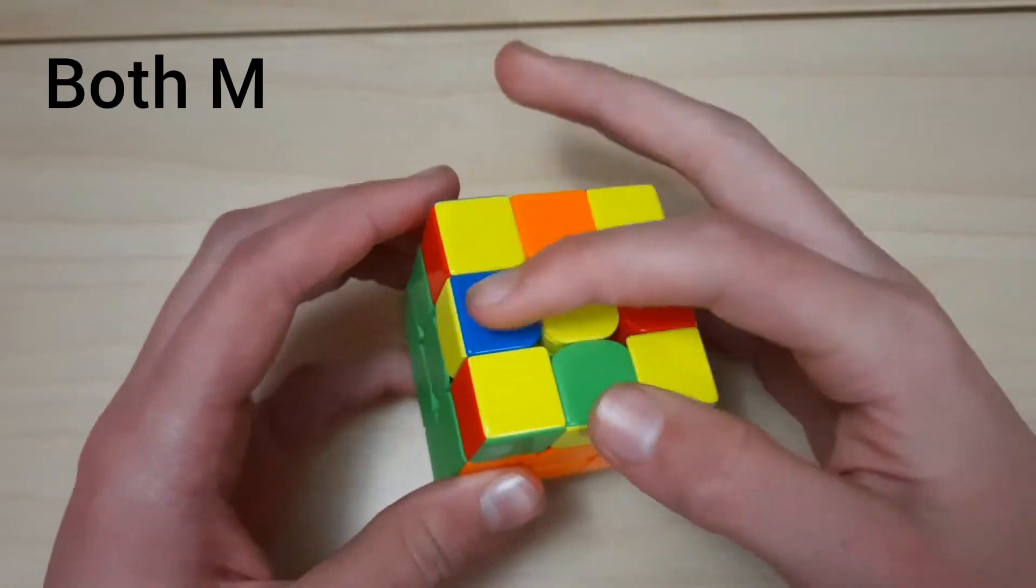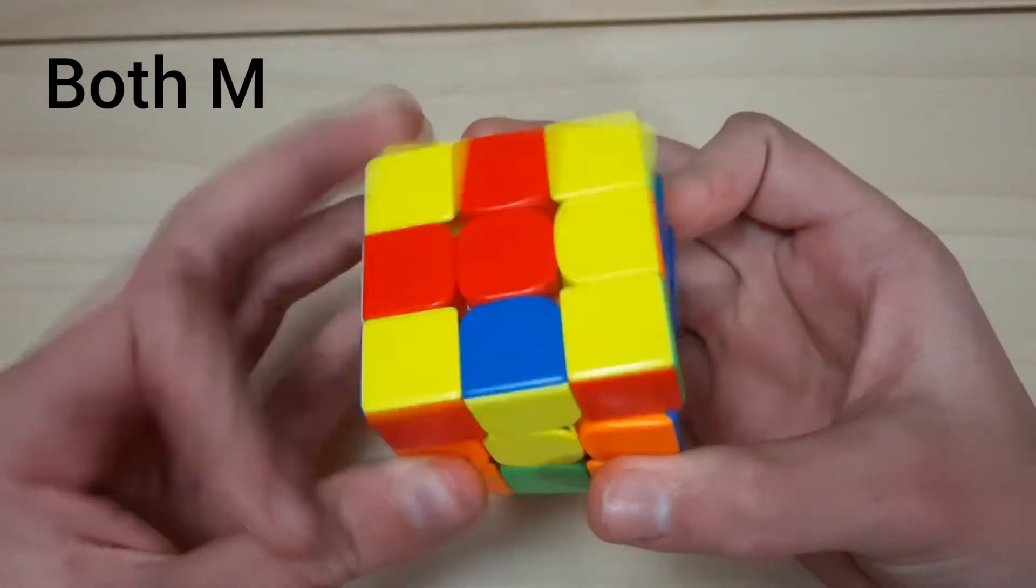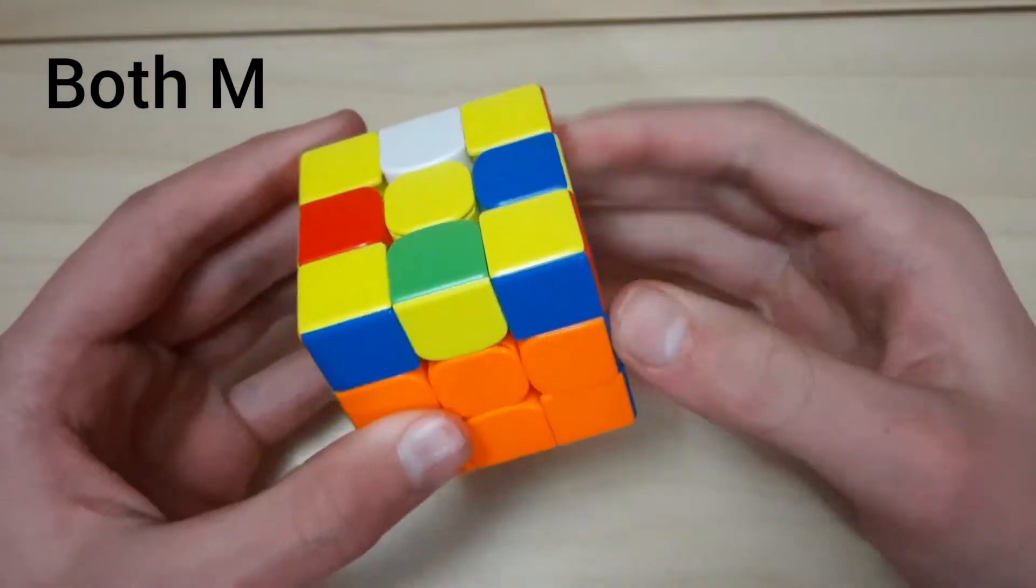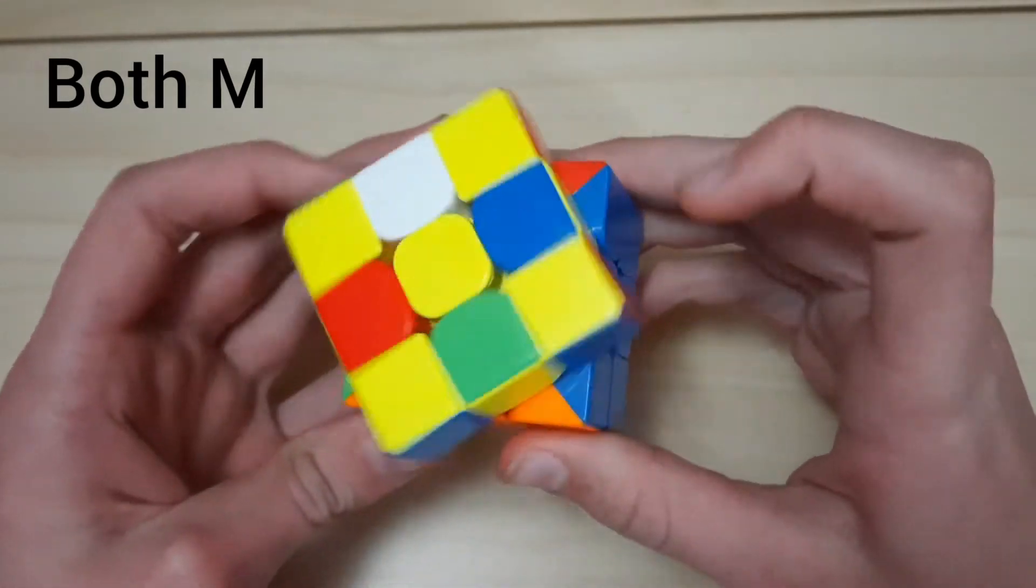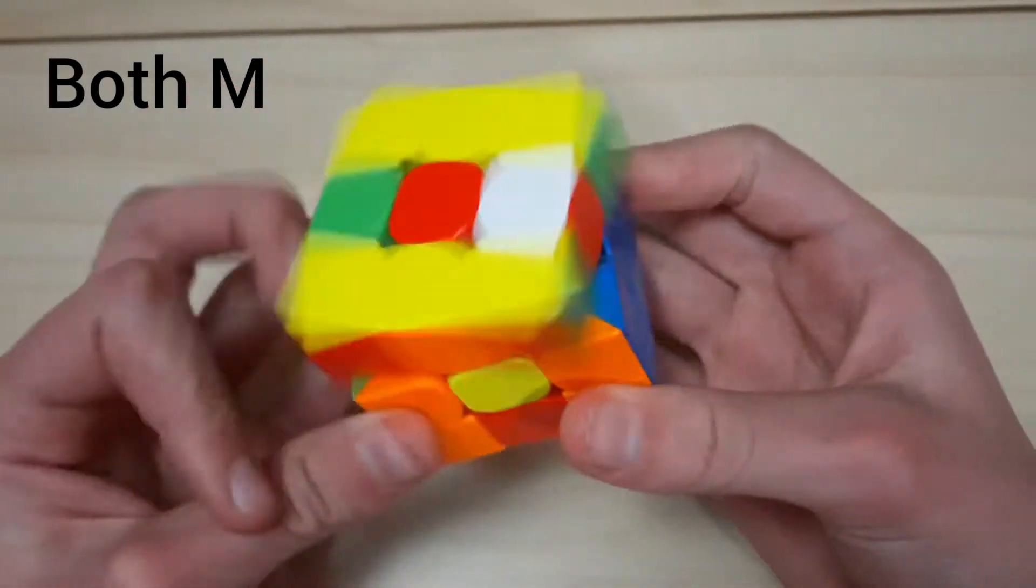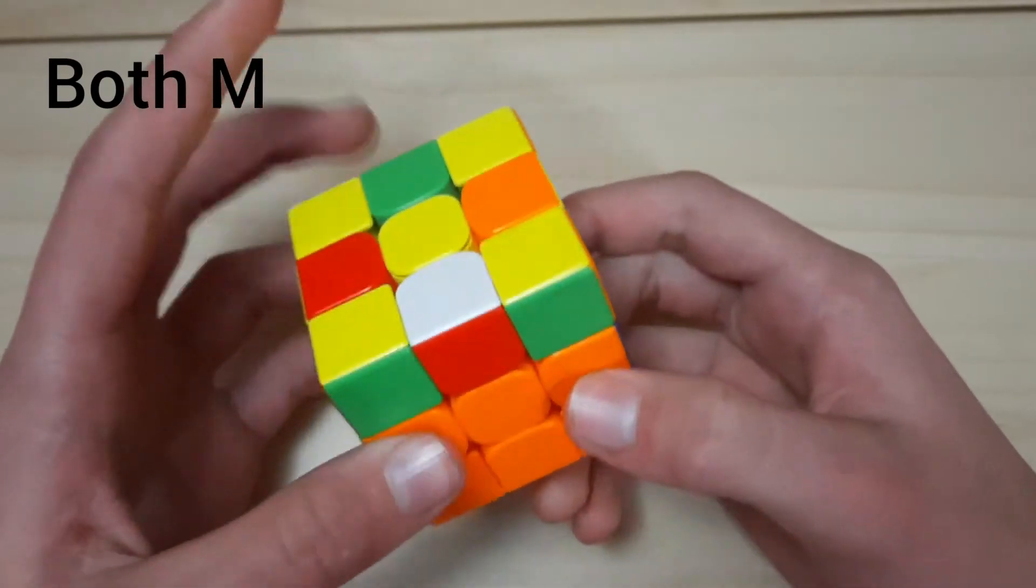In this case, since they're up here, we're just going to swap these two using an M'U2M', like that, pretty intuitive. And now we just have a mediocre arrow, so we'll swap these using an M'U2M'2, and then we're set up here, and we can actually cancel.